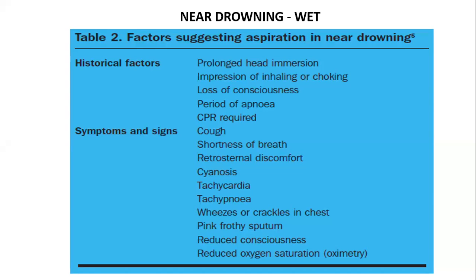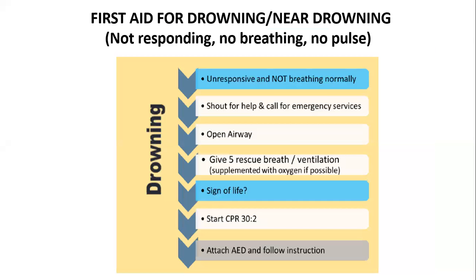For first aid in drowning or near drowning: if the patient is not responding, no breathing, no pulse — follow the same steps as for cardiac arrest. Call for help, call the emergency service, open the airway. Quite often you will see a lot of fluid there, so you want to remove that fluid. Do a chest compression with the patient in the prone position, compress at the back, and make sure the fluid comes out first. After that, put the patient in the supine position, then give five rescue breaths. After that, check whether the patient can breathe. If not, perform CPR.